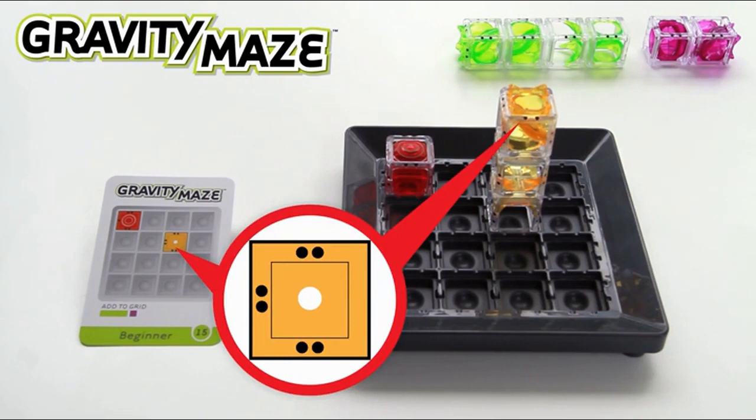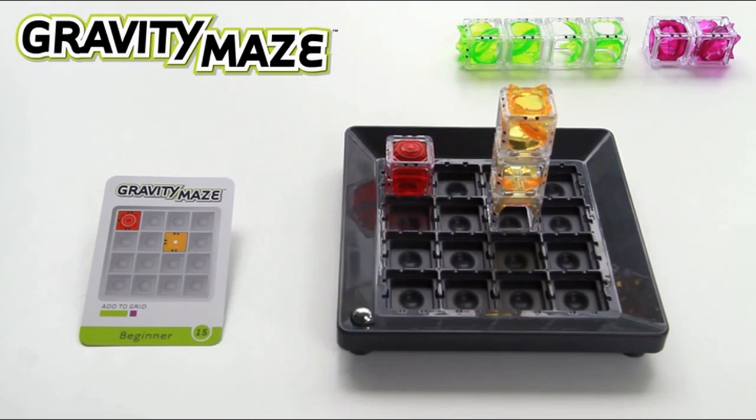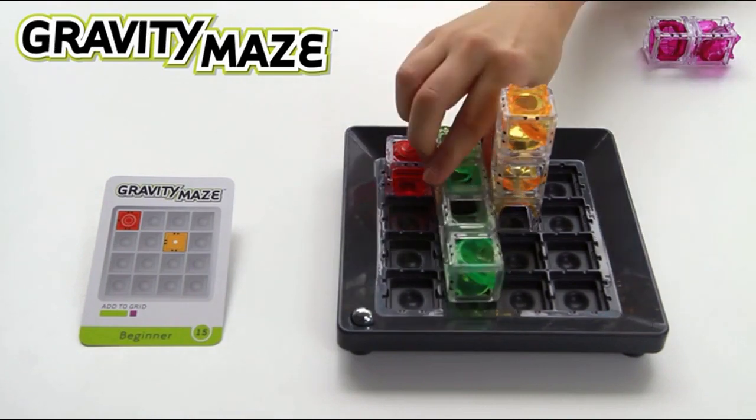Black dots on the towers show you the correct orientation for the towers. Towers can stand on their own, be stacked, or even laid on their side to create a maze.